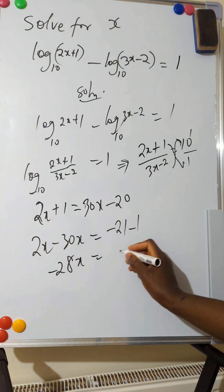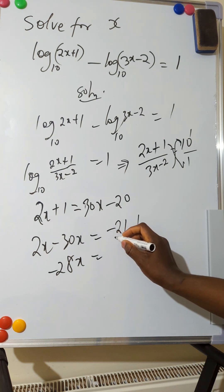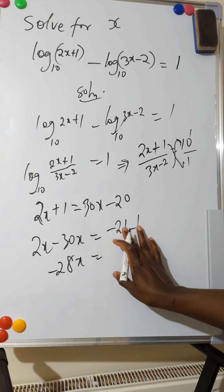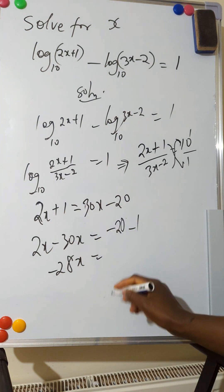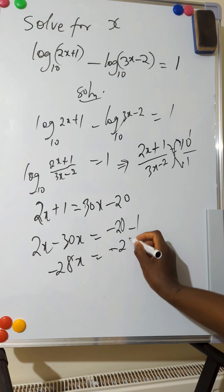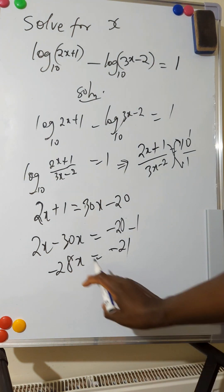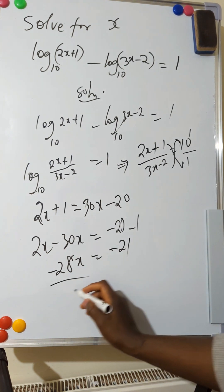Equals minus 20. Minus 20 minus 1 is minus 21. So let x stand alone, we divide both sides by minus 28.